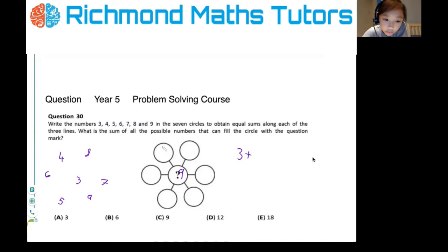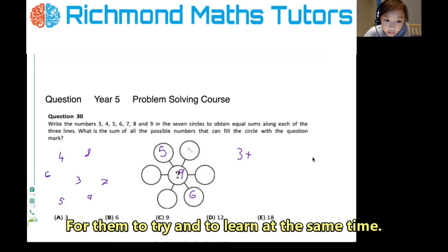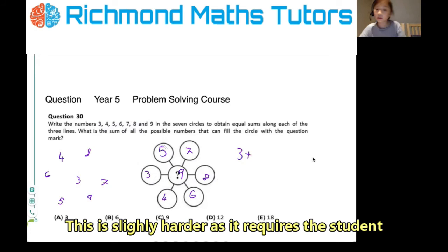So five, oh, five, six, seven, and four, three, and eight. So that's another solution, because they all equal to the same number. Okay.